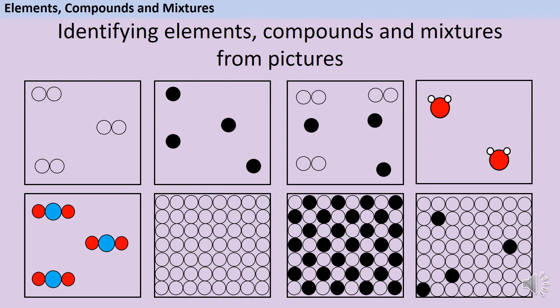Hopefully you've managed to identify that there are three elements. Some people get a little bit confused about the first one because we've got more than one atom together and they look like they're bonded. But remember, the important thing is that they're all the same type.